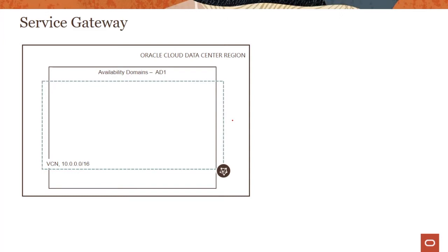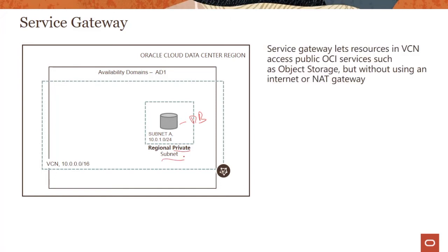The third concept is the service gateway. Say you have a database server running in a private subnet and instead of getting patches, you want to do a backup to object storage. Object storage is a public service with a public endpoint. From the private instance you cannot reach object storage because you'd need a public IP. Many customers work around this by assigning a public IP to the database server, but that is not a secure design — you should never assign a public IP to a database server.